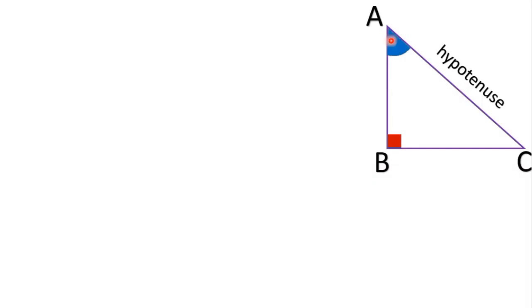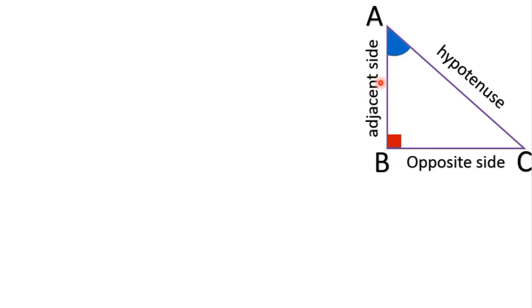Now take any one angle — angle A or angle C. With respect to angle A, BC is the opposite side and AB is the adjacent side.